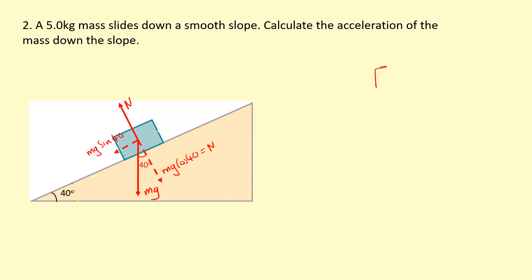So F equals MA, Newton's second law. The resultant force down the slope is Mg sine 40, where M in this case is 5 and g is 9.81. Setting this equal to Ma, we get 5 times acceleration. So you can see the mass actually cancels out.